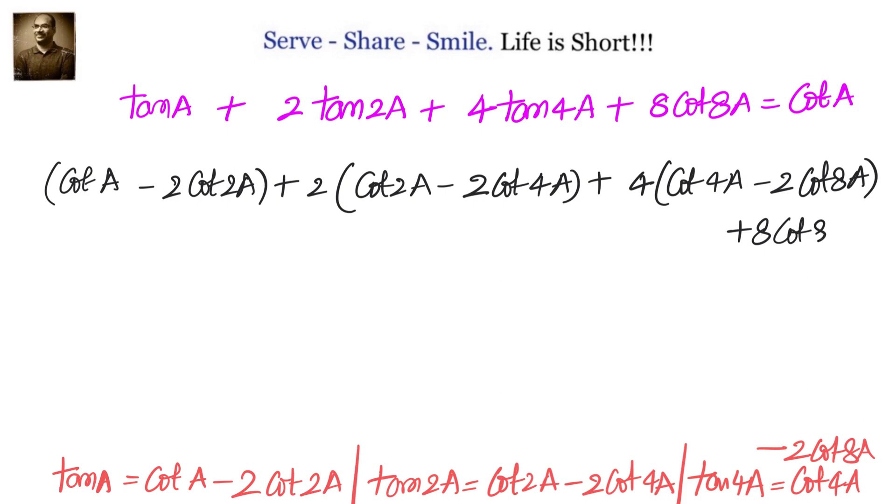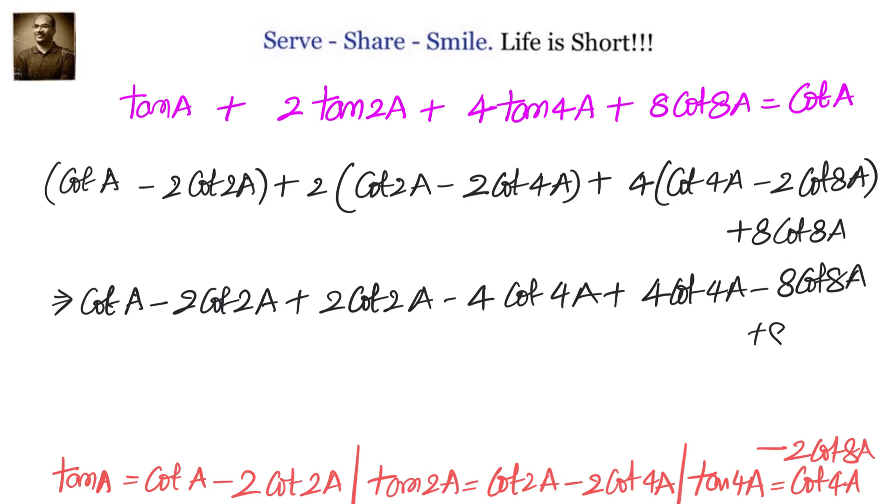Let's open the brackets. We will have cot a minus 2 cot 2a plus 2 cot 2a minus 4 cot 4a, plus 4 cot 4a minus 8 cot 8a, plus 8 cot 8a.